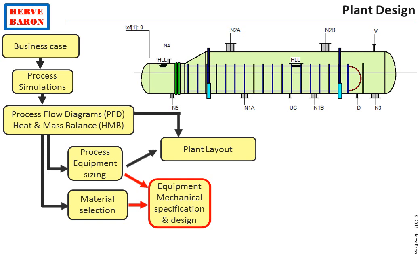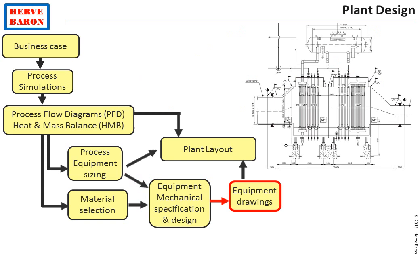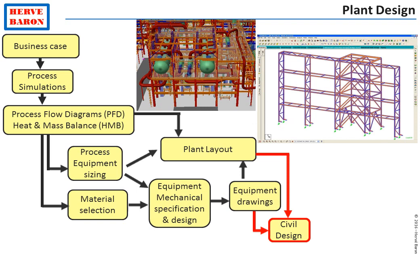Once the material of construction of equipment has been specified, the equipment can be purchased from vendors and their mechanical design can be performed. This will result in equipment drawings showing precisely all information about the equipment such as dimensions, positions of support, weights and loads on foundation, position of piping connections, and so on. Such information will allow to confirm the plant layout.